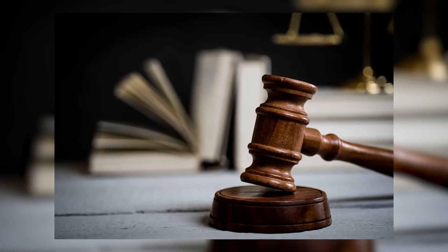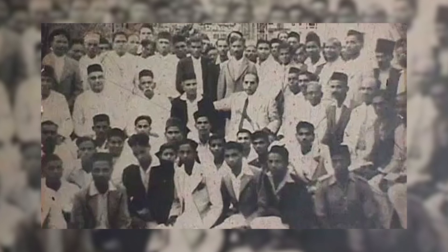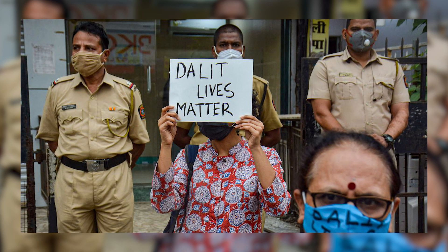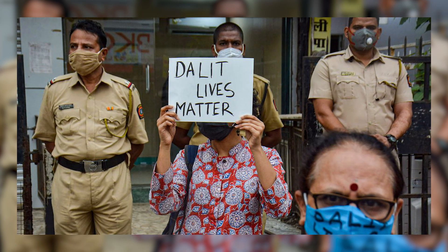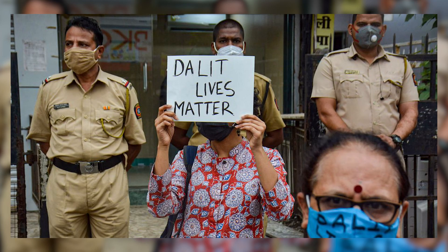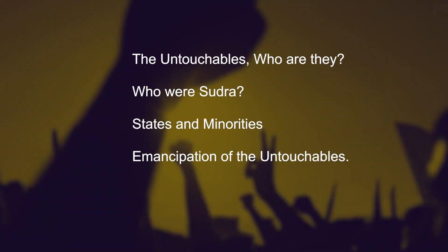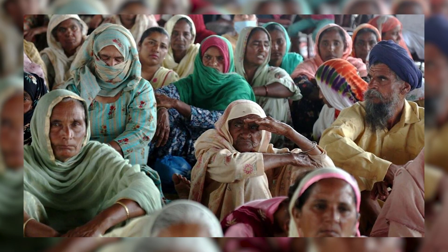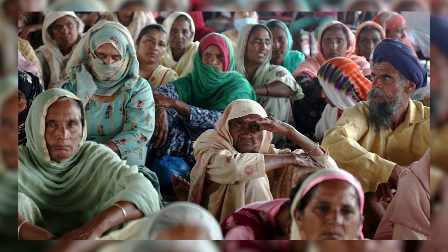After being educated abroad, he came back to India and started practicing law. In 1920, he formed the Bahishkrit Hitakarini Sabha in Bombay to promote Dalit interests and to resolve their problems by placing them before the government. He was not only critical of the caste system but was instrumental in the movement for eradication of caste-based discrimination. Major writings of Ambedkar include 'The Untouchables: Who Are They,' 'Who Were the Shudras,' 'States and Minorities,' 'Emancipation of the Untouchables,' and 'Annihilation of Caste.' The Dalit subaltern group is one of the most oppressed and discriminated groups in Indian society.